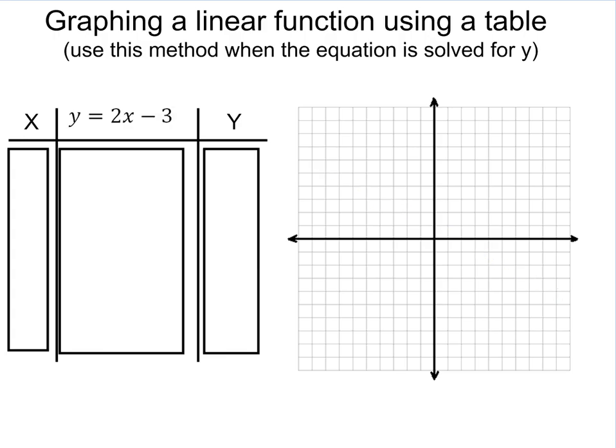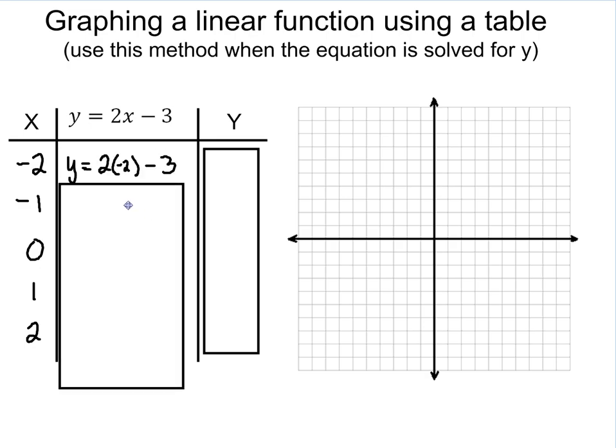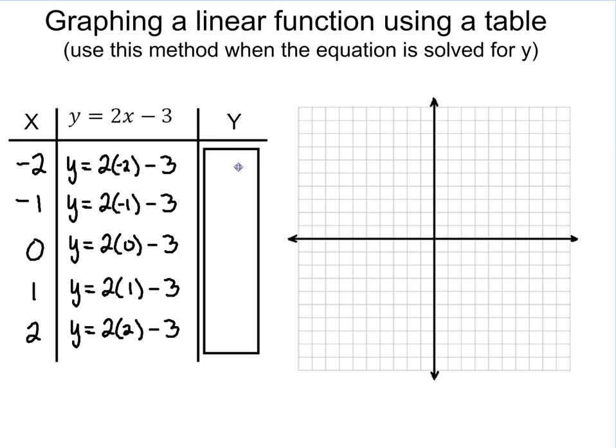We're going to use the exact same table of values. Negative 2, negative 1, 0, 1, and 2. We're going to plug in negative 2 for each of the values. Then we're going to plug in. So 2 times negative 2 is negative 4. Minus 3 is negative 7. And we go all the way down the list and get all the values there as well.